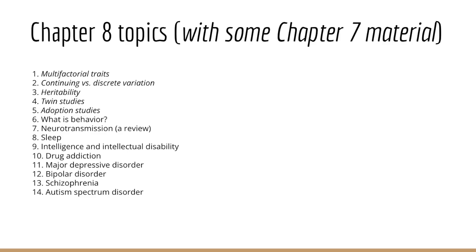Moving on into Chapter 8, we'll consider the precise definition of behavior and review the process of neurotransmission and what happens at a synapse between two neurons. We'll cover various behaviors: sleep, intelligence and intellectual disability, drug addiction, major depressive disorders, bipolar disorders, and schizophrenia — covering schizophrenia twice across Chapters 7 and 8 — as well as autism spectrum disorder.